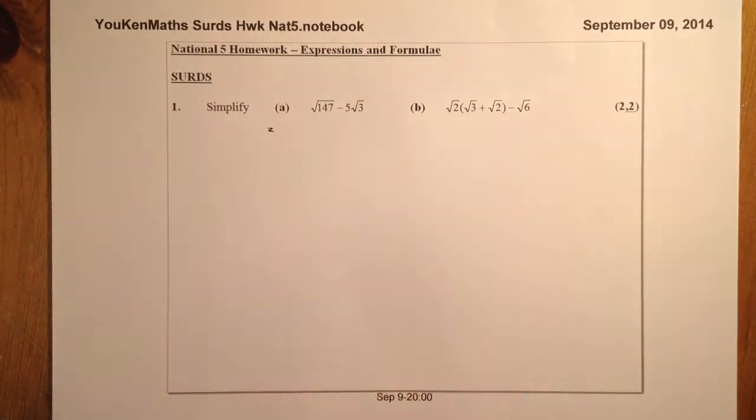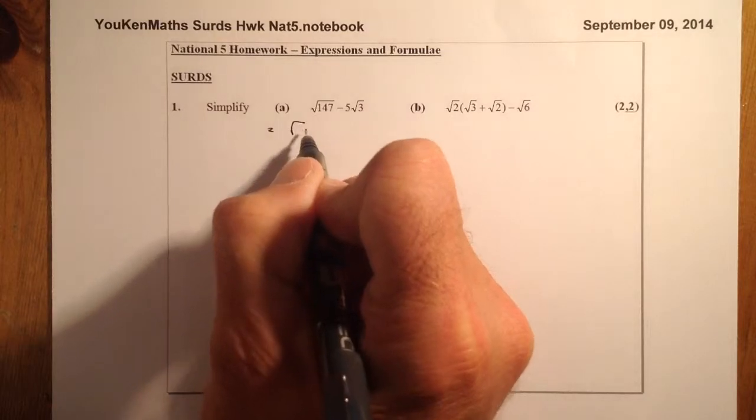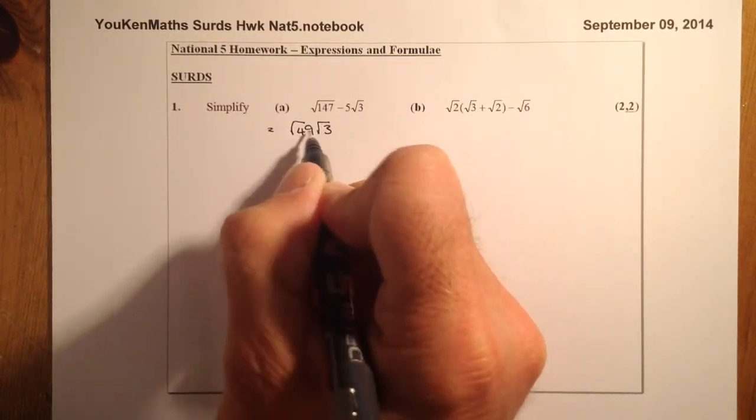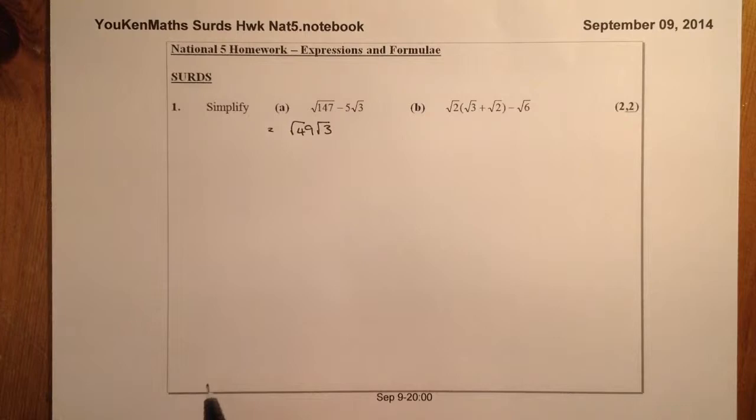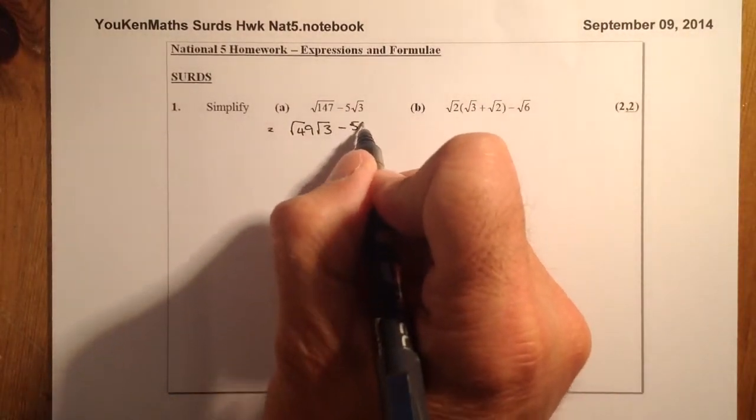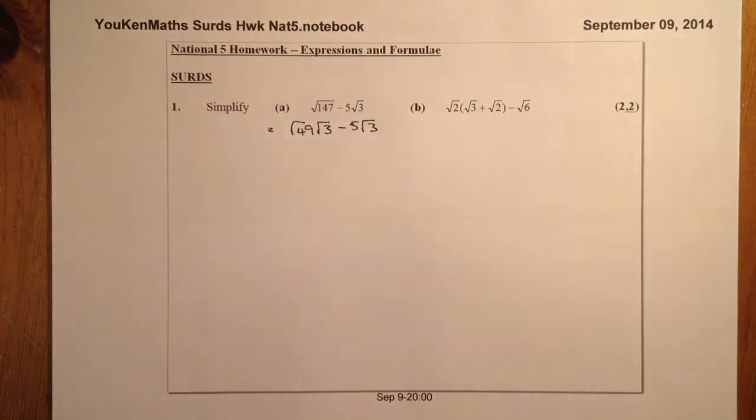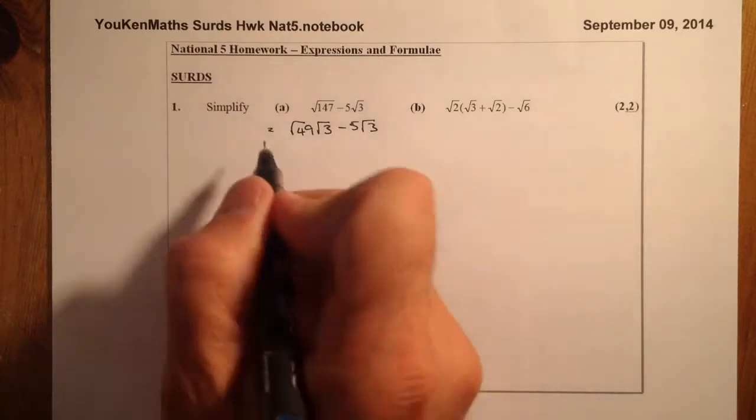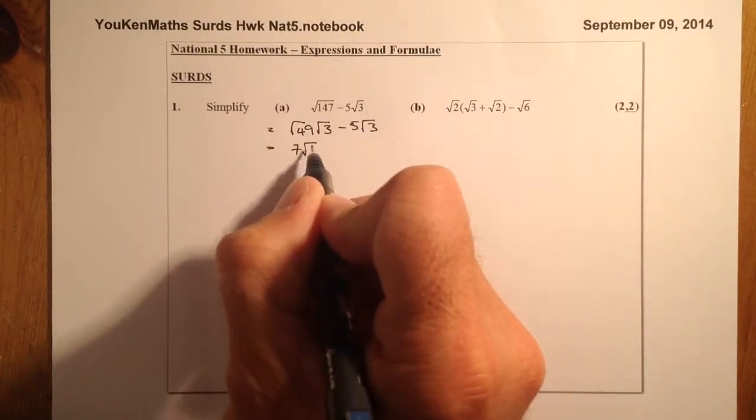So two numbers that multiply together to get 147 would be 49 and 3. So what we'll start off here with is root 49 and root 3 because they multiply together to get the 147. After I get them together, I'm going to subtract 5 root 3. Here we go. So we've got 7 root 3, take away 5 root 3.